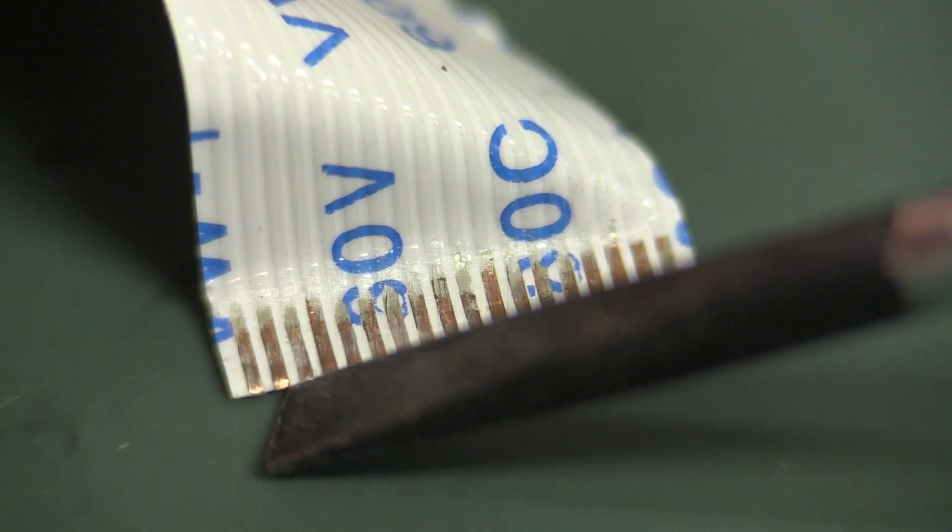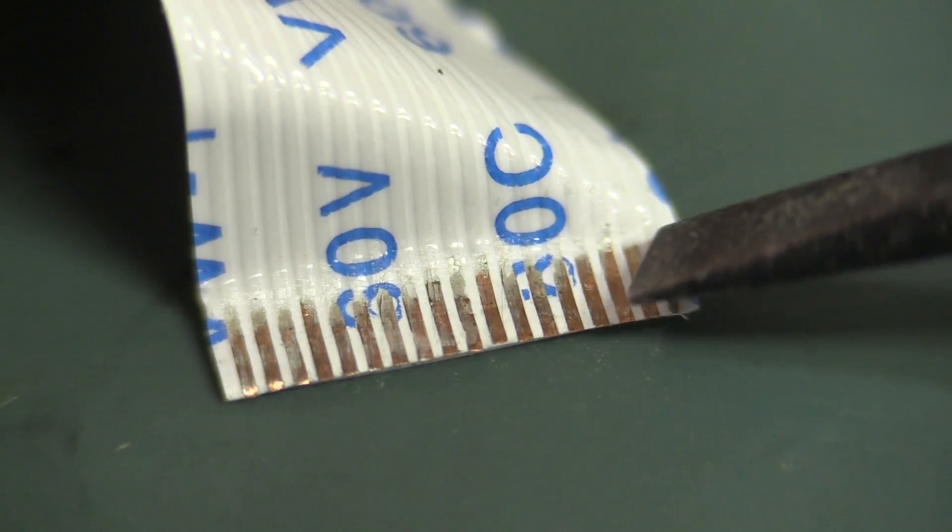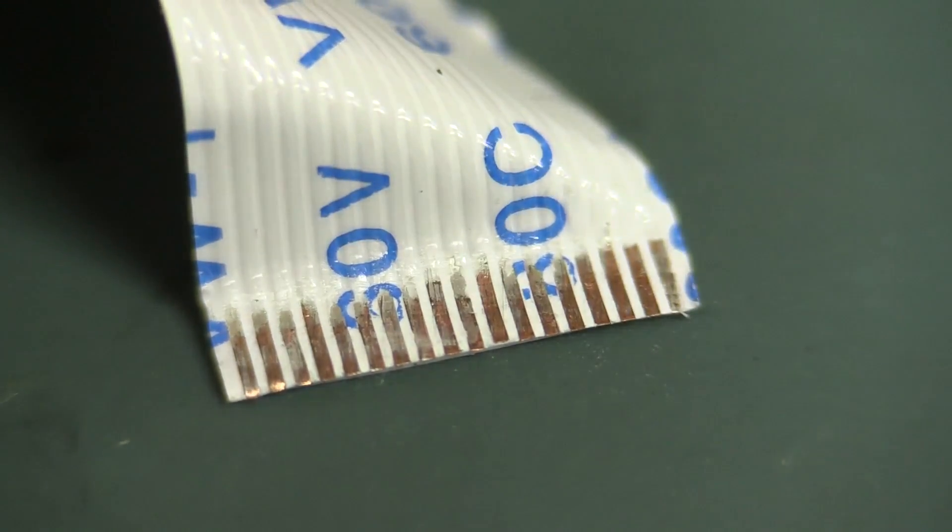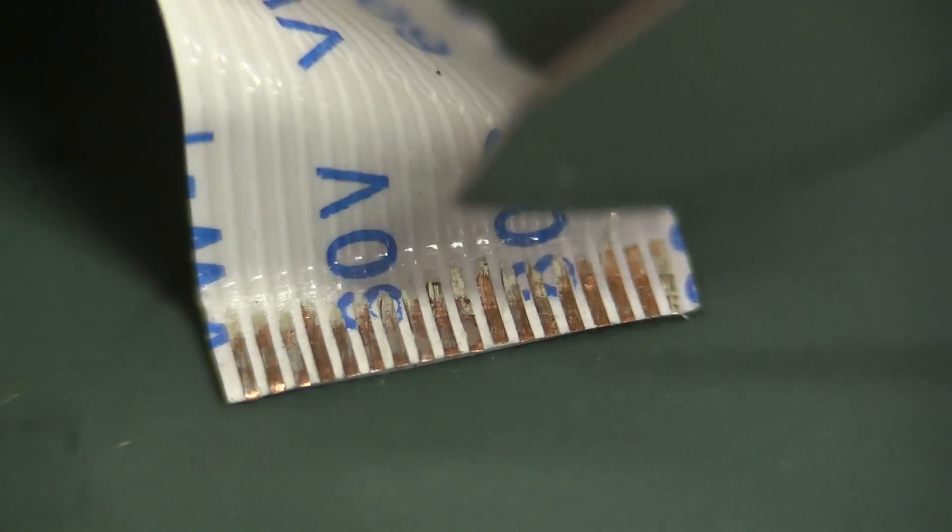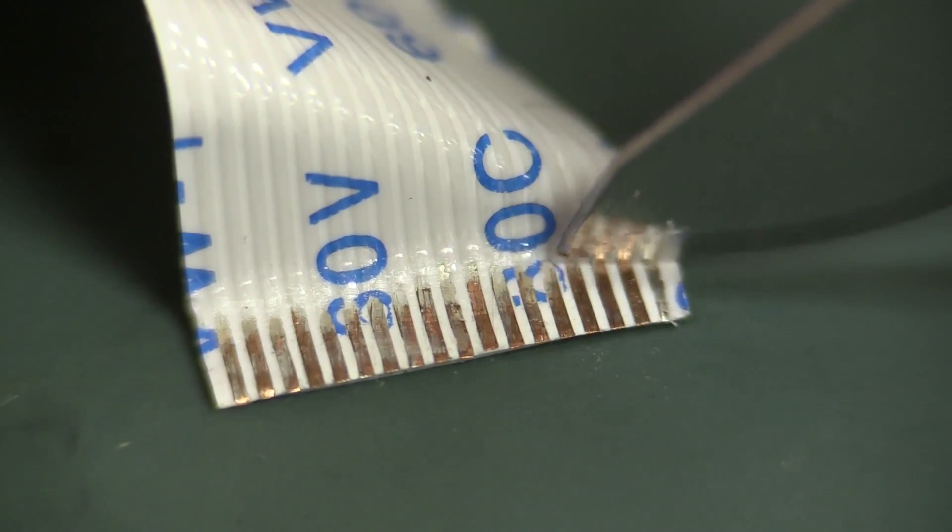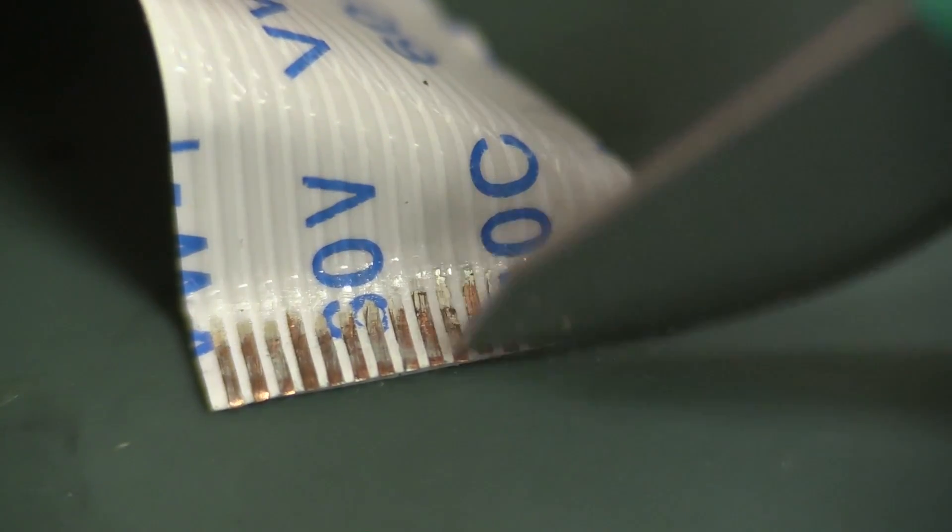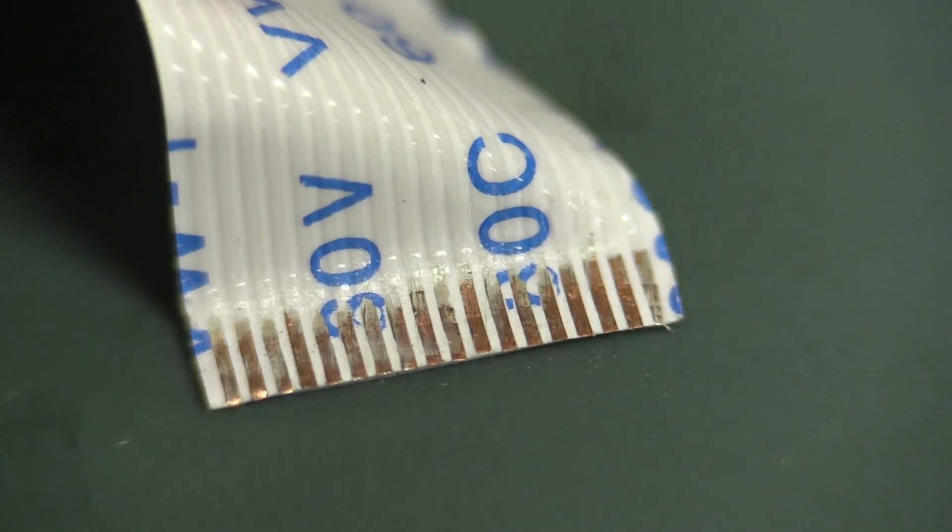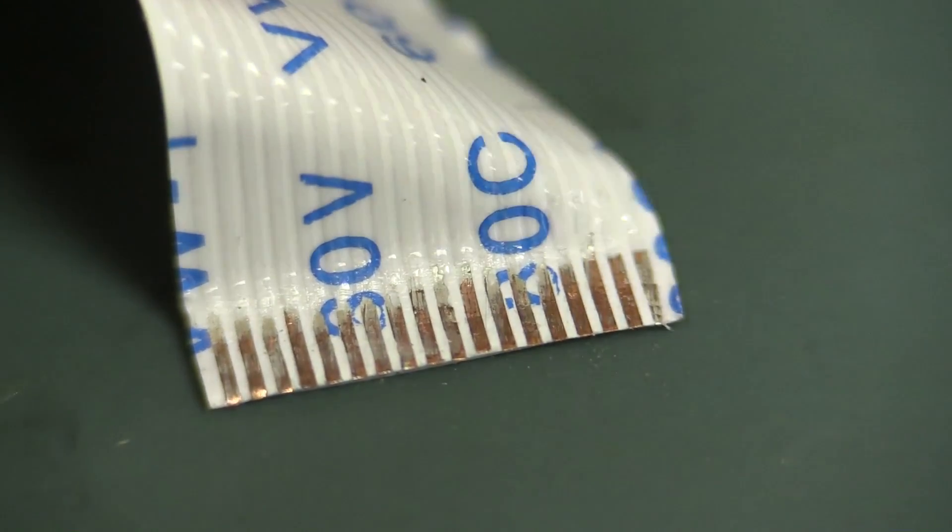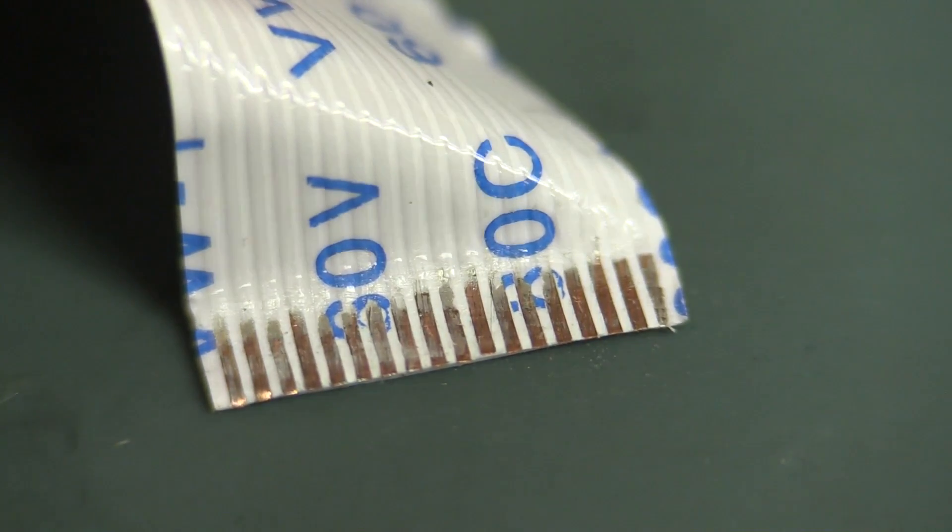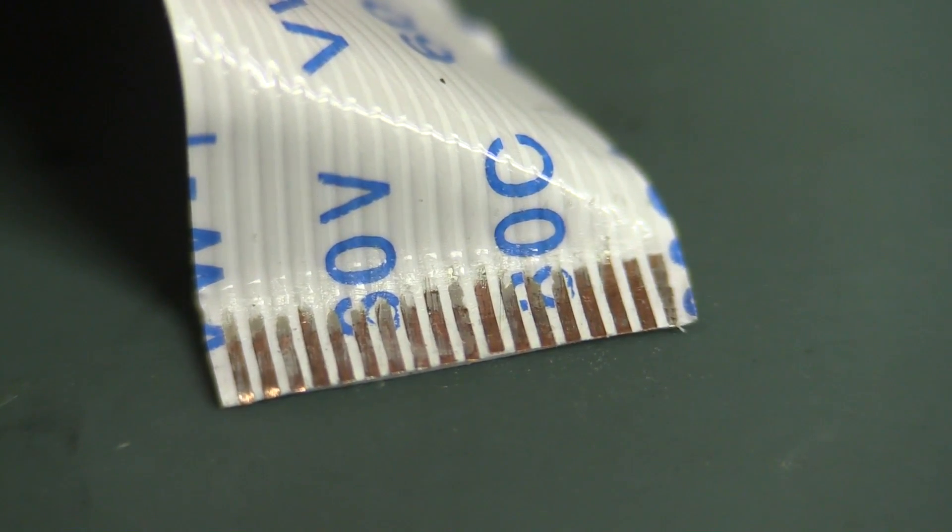And all this white stuff, you can actually get in there. If you're very careful, apply the right amount of pressure, and just scrape that off. And get in there and actually get yourself a new flat flex end which you can put into the connector.